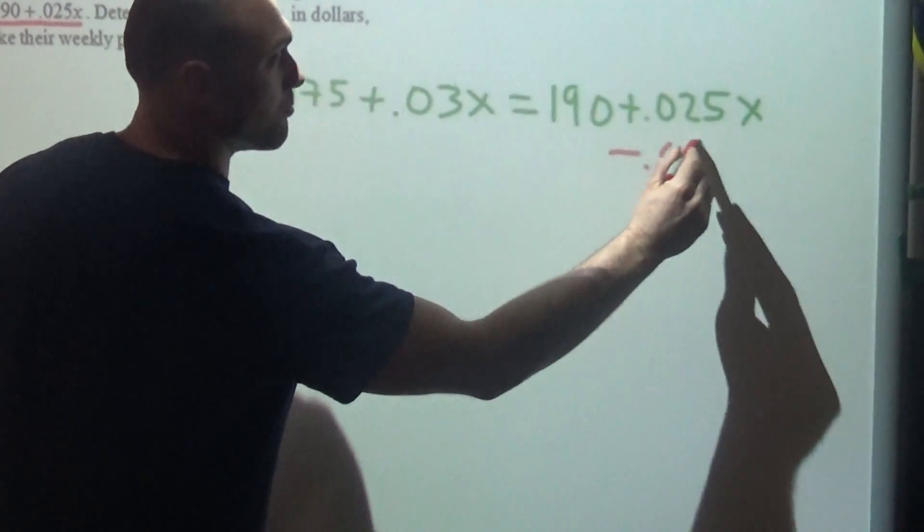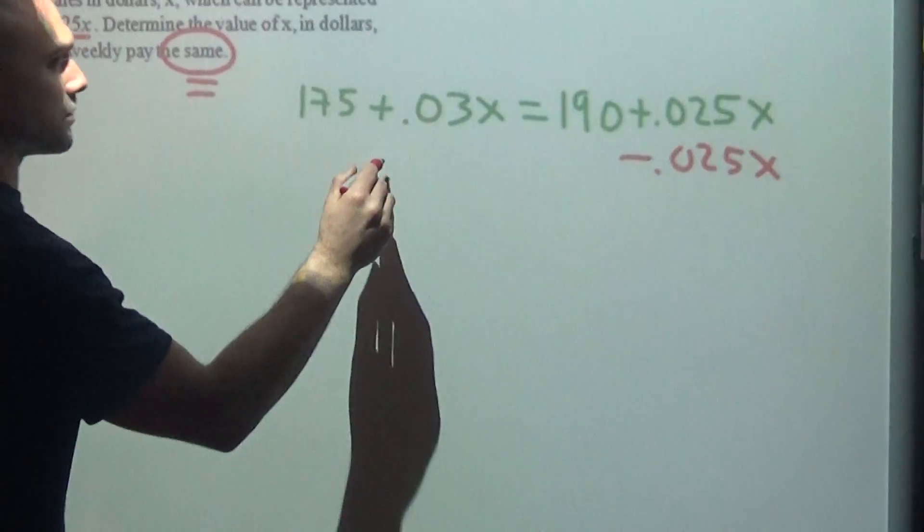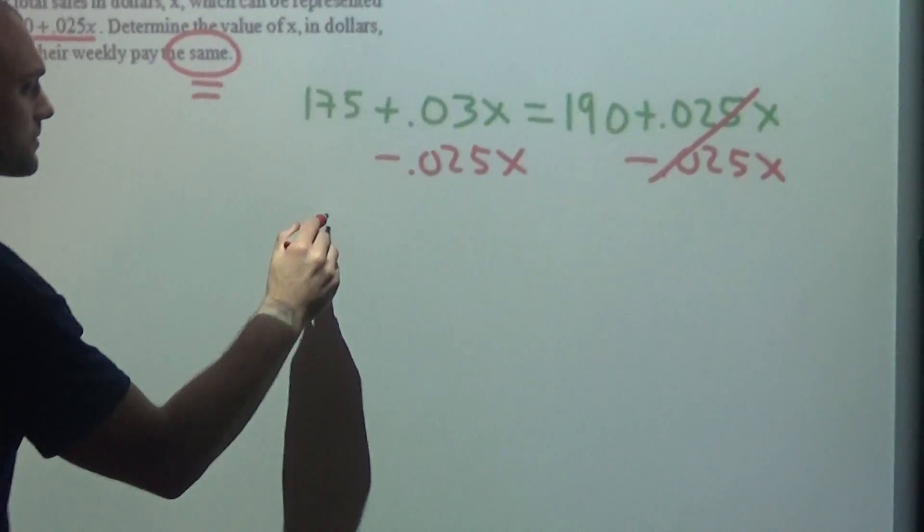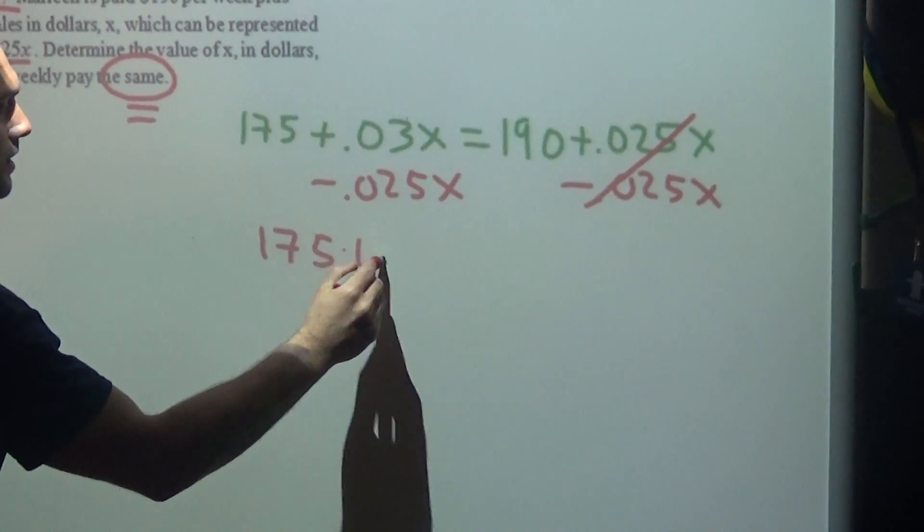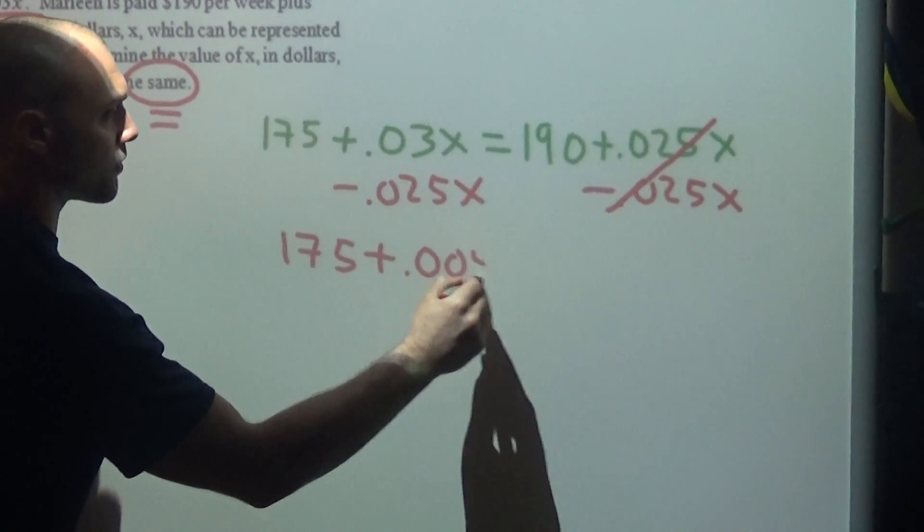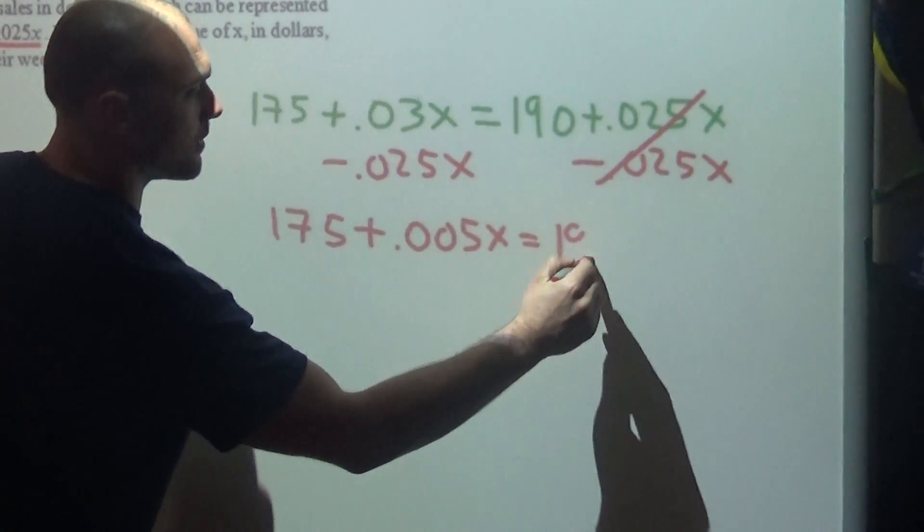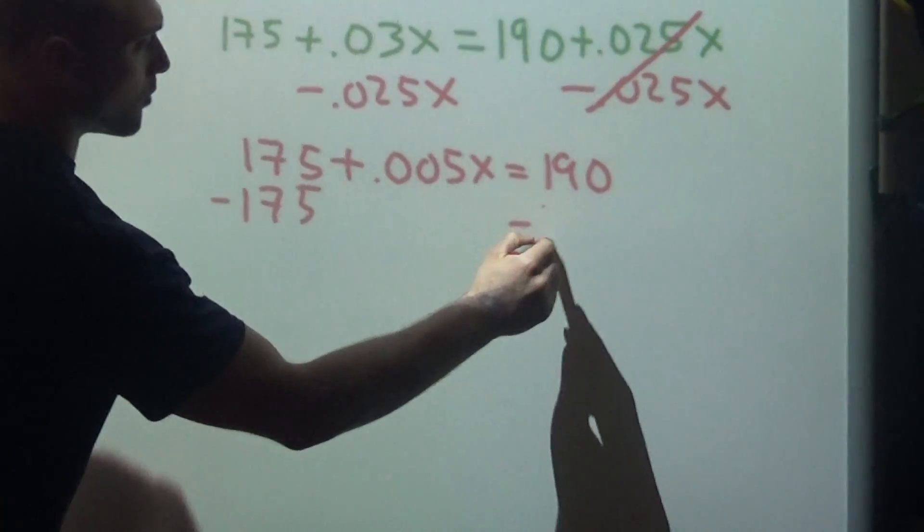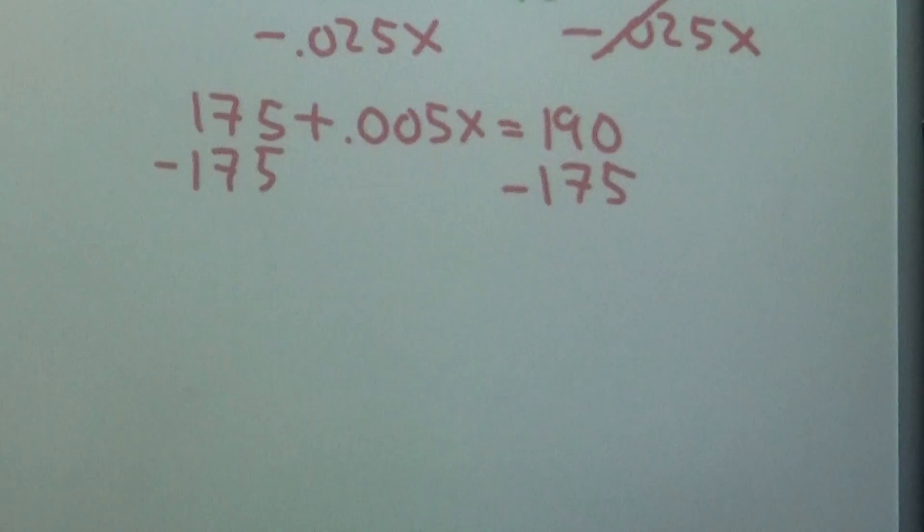So I'm going to start by subtracting 0.025x from both sides. So now that cancels. I'm going to have 175 plus 0.005x. Okay, and I'm going to subtract 175 from both sides.